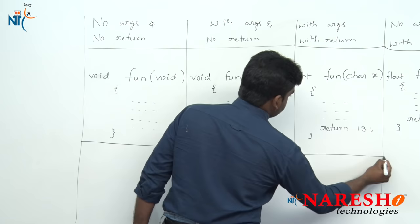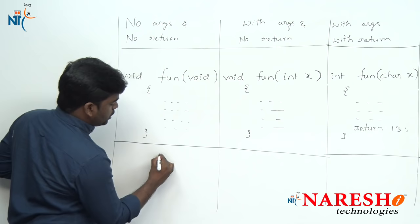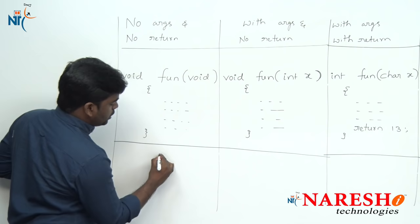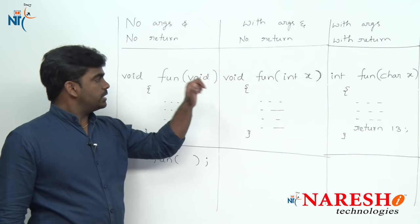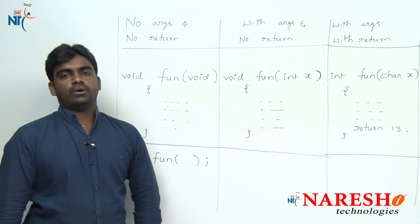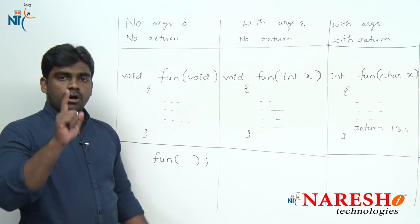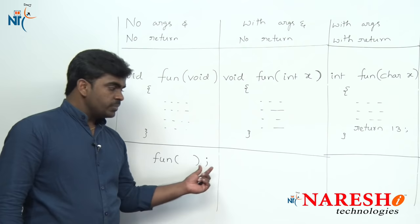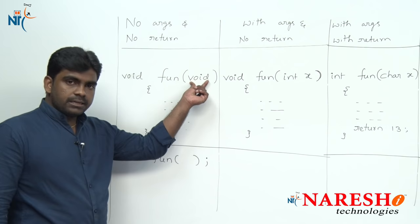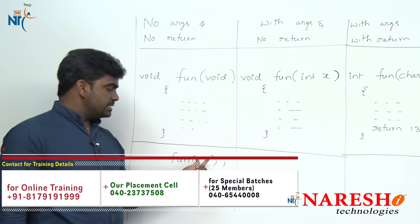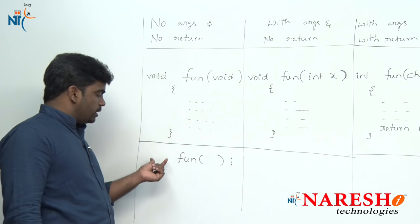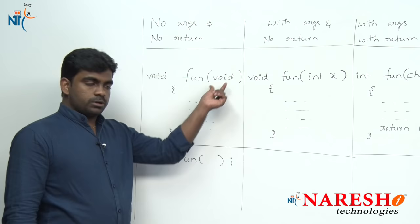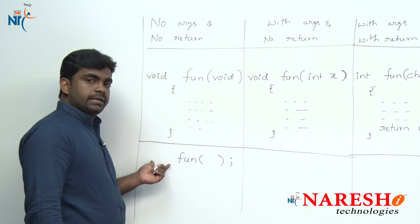Now, how to call a function? For four classifications, we call functions in four different ways. Function calling is always a single statement that ends with a semicolon. For the first classification — no args, no return values — whenever you call this function, it is not expecting any input and not giving any output. So no need to pass anything and no need to collect anything. The function call is simply: fun() with empty parentheses and a semicolon.